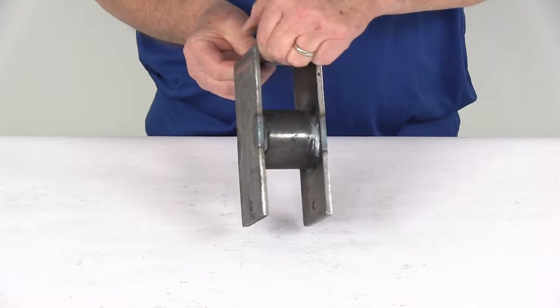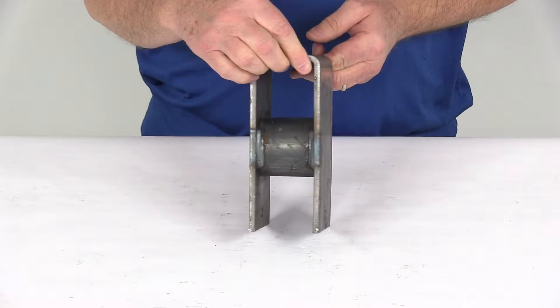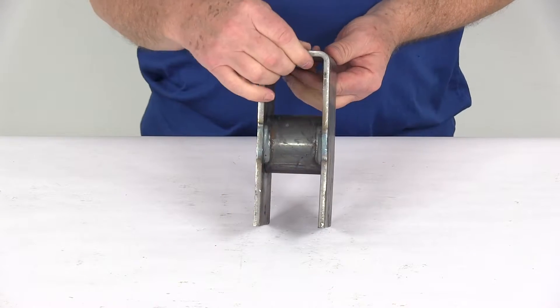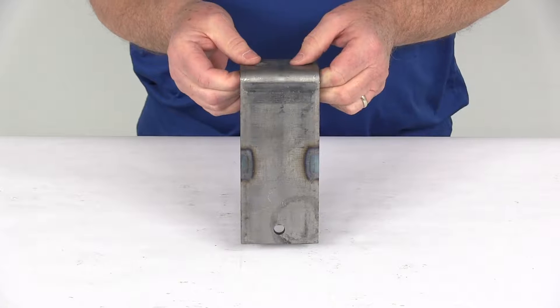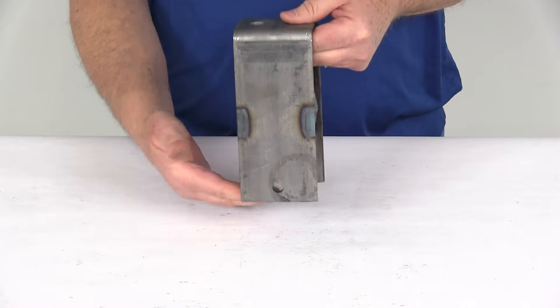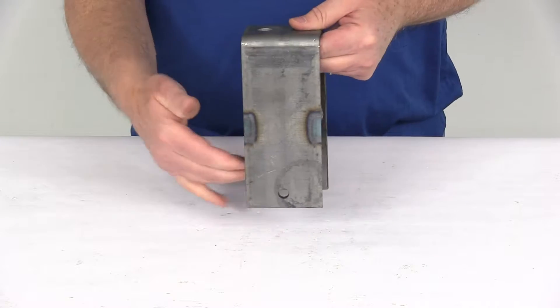Now this rear hanger is designed to work with trailer suspension systems that have 2 inch wide slipper springs. This hanger will provide the attachment point for the leaf spring. The hanger suspends the spring from the trailer frame by providing a resting place for the slipper end of the spring.